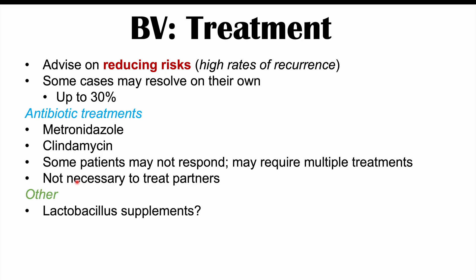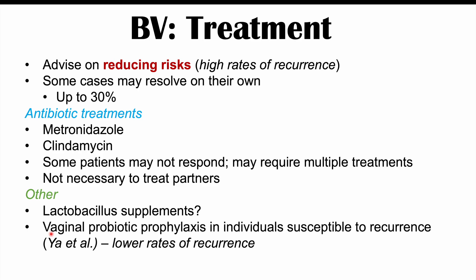Other possible treatments include Lactobacillus supplements, postulated to increase the amount of Lactobacillus in the vaginal flora, and vaginal probiotic prophylaxis — taking a vaginal probiotic before getting BV again. This probiotic, containing a mixture of bacterial species including Lactobacilli, does seem to lower recurrence rates. If you want to learn about trichomoniasis or vaginal candidiasis, please check out those lessons. Thanks so much for watching.